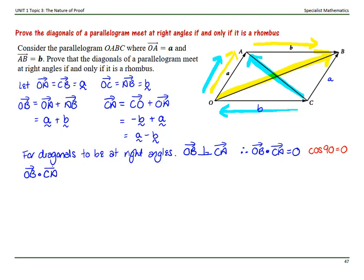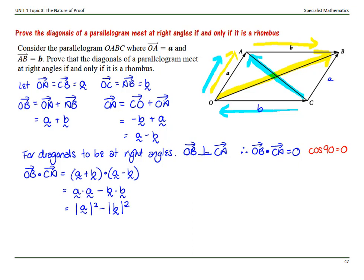The dot product of OB and CA: OB we worked out was vector a plus b, and CA we worked out was a minus b. Expanding that out, we have a dot a — it's a difference of two squares, so the middle terms cancel — minus b dot b. That gives us the magnitude of a squared minus the magnitude of b squared. The dot product of OB and CA equals zero if the magnitude of a squared minus the magnitude of b squared equals zero.